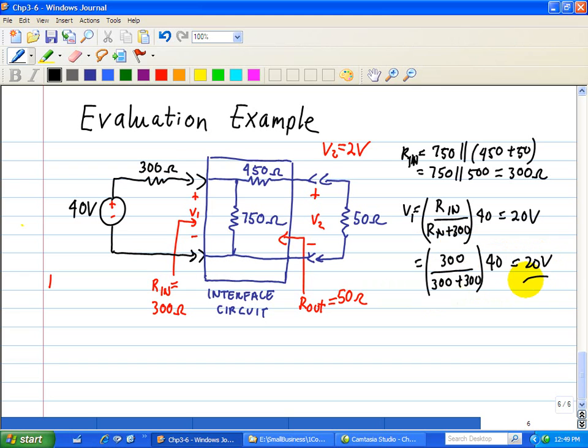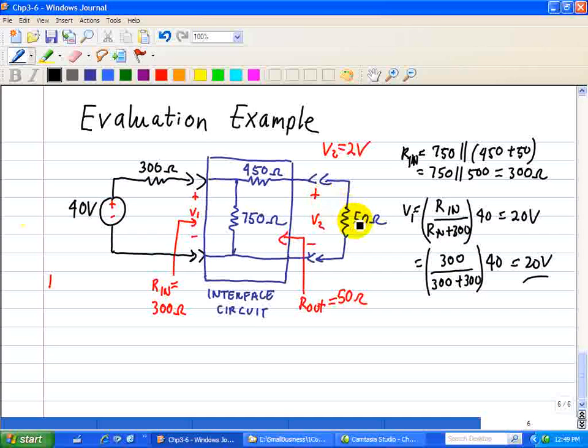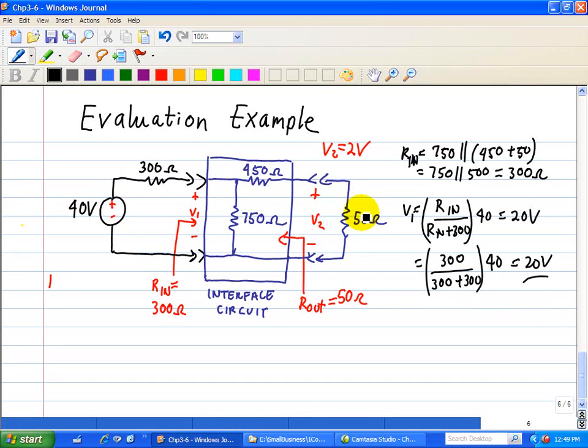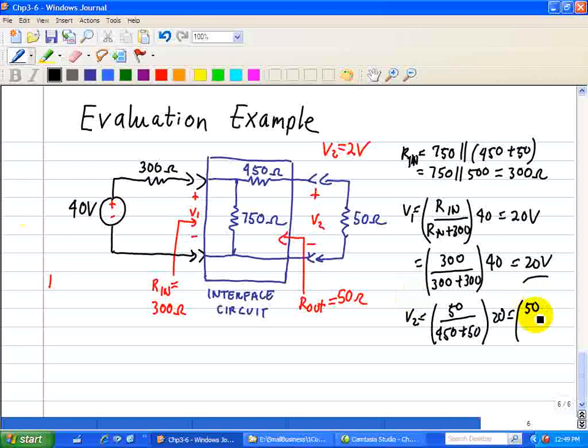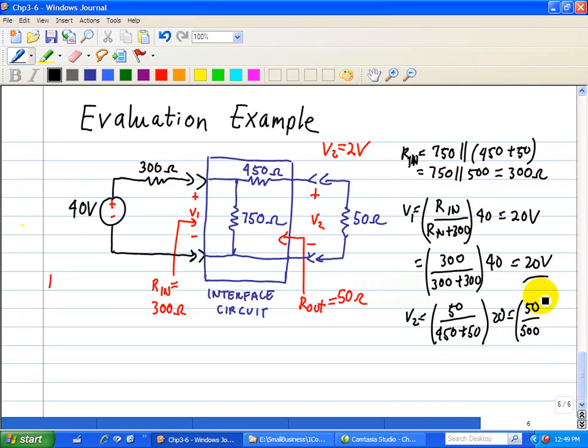Now taking this voltage, we see that this 20 volts is also across the 450 and 50 ohm load. So using a voltage divider again, V2 is equal to 50 divided by 450 plus 50 times 20, which is equal to 50 over 500, which is one tenth of 20, or equal to 2 volts.